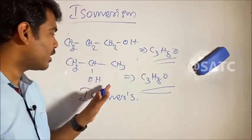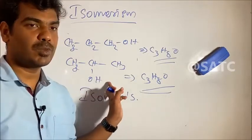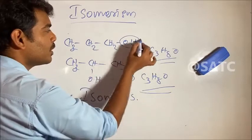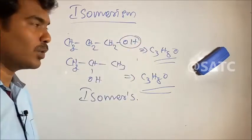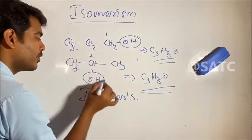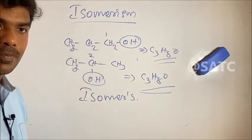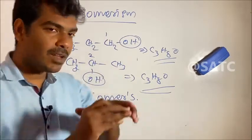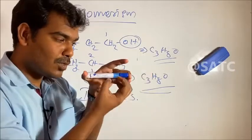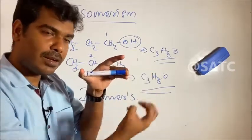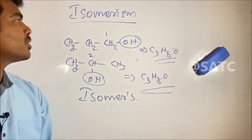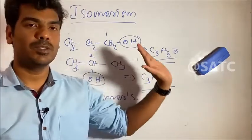Now, position isomers — where OH is a functional group placed on carbon 1 or carbon 2 of the chain. When the functional group is attached at different positions on the same chain, it is called position isomerism.